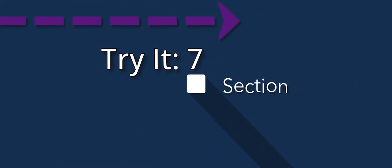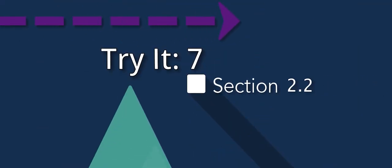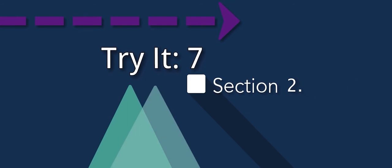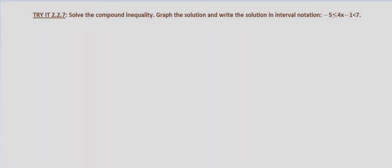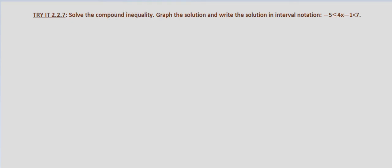In this problem we're looking at a special form of an AND compound inequality in which it's written with the expression in between two values. We're solving the inequality, graphing the solution, and writing the solution in interval notation, and it's given in the form where negative 5 is less than or equal to 4x minus 1 is less than 7.